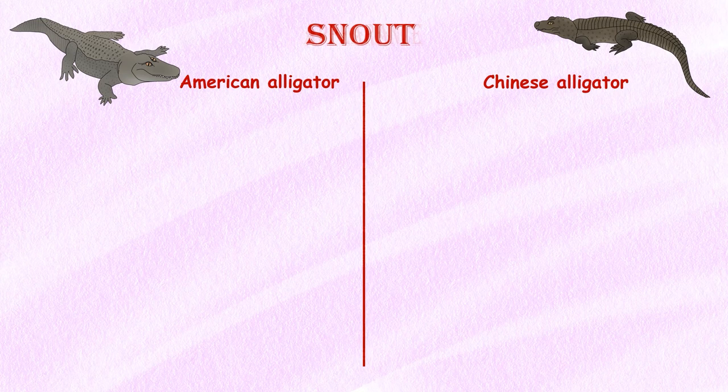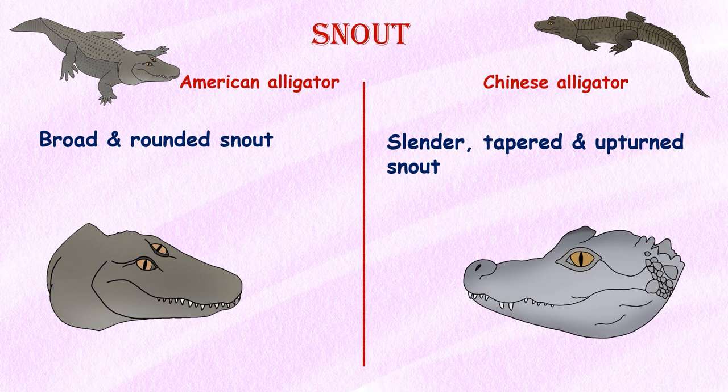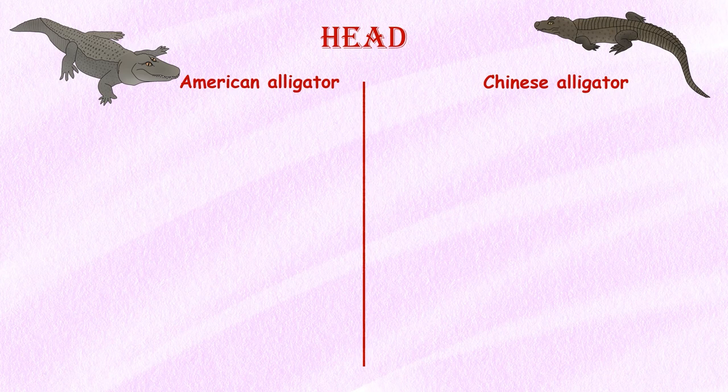Snout. The American alligator has a broad, rounded snout. In contrast, the Chinese alligator has a more slender, tapered, and upturned snout.